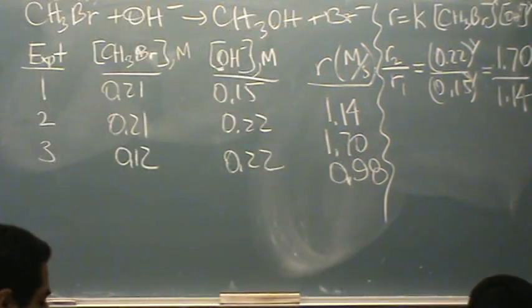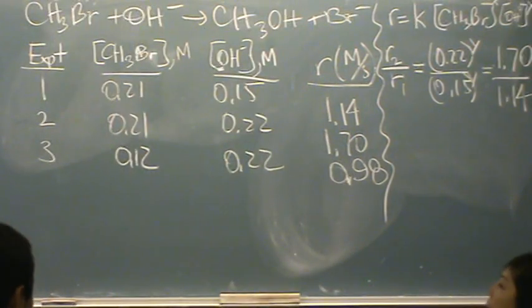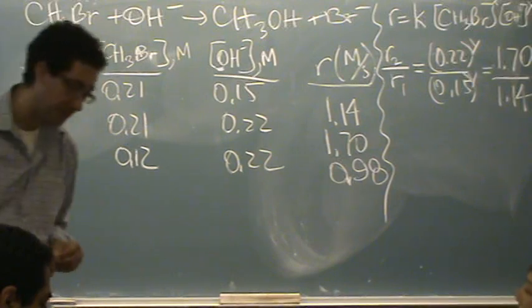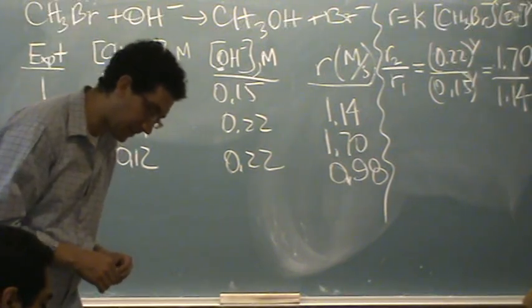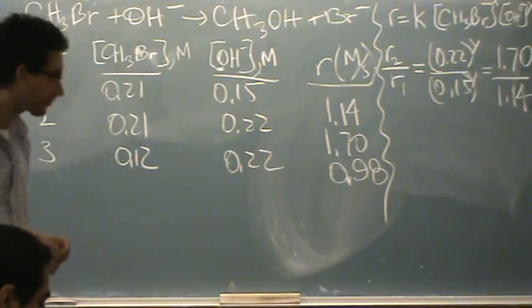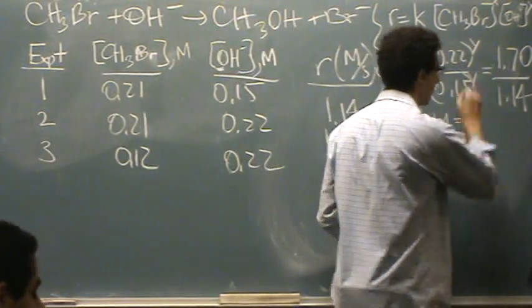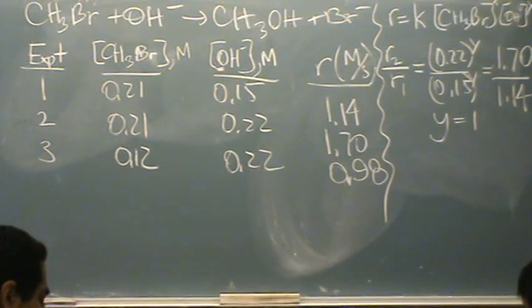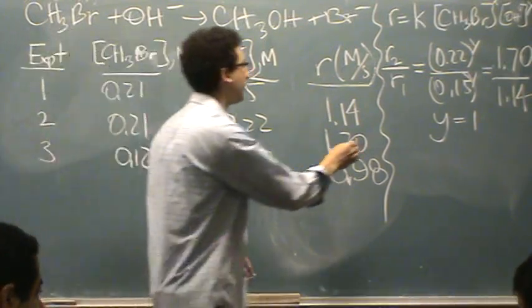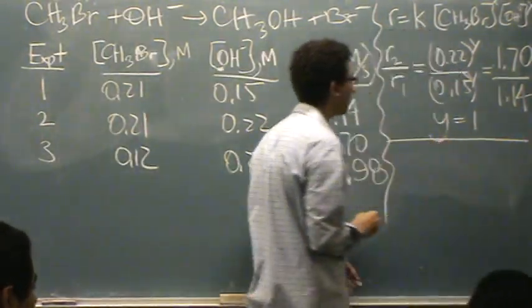So, I got rid of the K's, I didn't write this CH3Br because I knew all that stuff would cancel. In this case, when you solve for Y, Y is going to equal 1. So, that's half of it, or part of it.